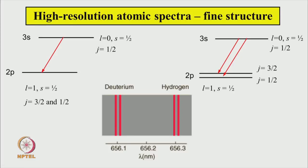These two states can now have energy levels as shown on the right-hand side. Earlier, 3s and 2p were connected by only one transition, but because of this splitting, 2p can have two types of total angular momentum — j equal to 3/2 and j equal to 1/2 — giving two transitions. These two transitions are actually what is seen in the spectrum of deuterium and hydrogen. This fine structure is very easily explained with the introduction of spin angular momentum s, which takes a value of half.